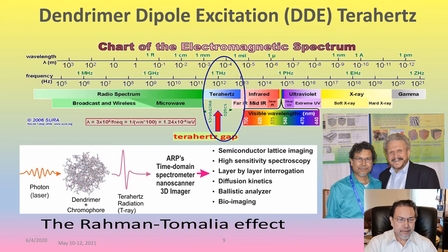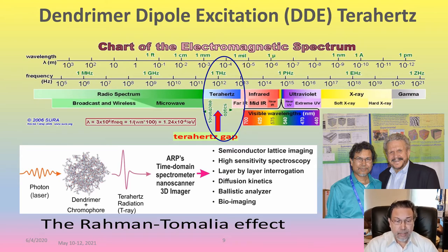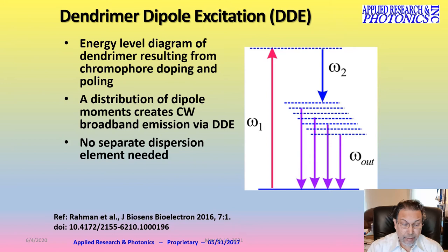We use a polymeric molecule which is spherical, not a linear chain polymer. This polymeric molecule is called an endomer, and when combined with a chromophore, it creates dipole population inside and around the molecule. We can excite that dipole with a suitable pump laser, and then dipole relaxation and decay produce the terahertz radiation. Here is the energy level diagram: when we pump with omega-1, quasi-stable states in the band gap are formed, and the subsequent decay gives us the terahertz.